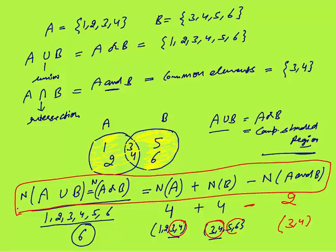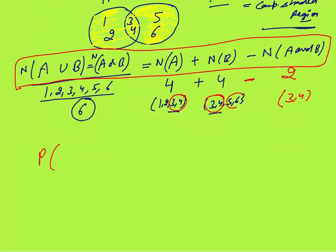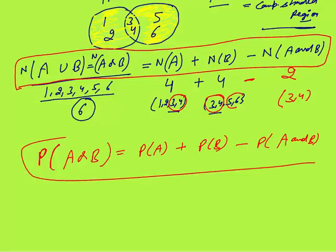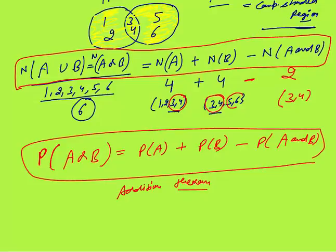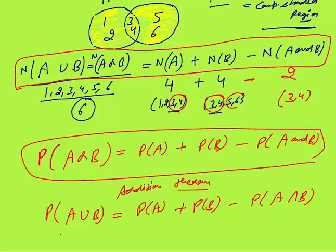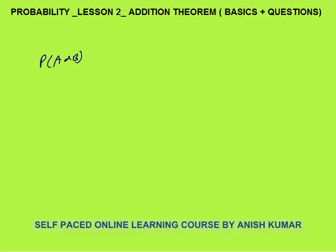From here the formula for probability also comes, which says that probability of A or B. The formula is: probability of A or B equals probability of A plus probability of B minus probability of A and B. That is the addition theorem. Probability of A or B equals P(A) + P(B) − P(A and B).